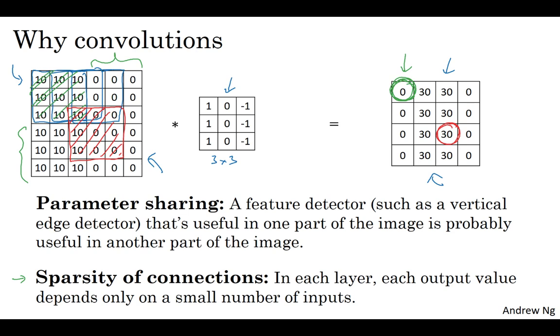And so through these two mechanisms, a neural network has a lot fewer parameters, which allows it to be trained with smaller training sets and is less prone to be overfitting.